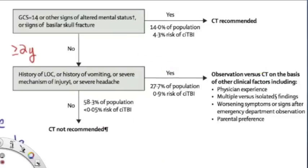Now let's look at the older kids. In the kids who are 2 or older, we're going to follow this rule. Again, if they have a GCS of 14 or other signs of altered mental status or basilar skull fracture, you know what? Go ahead and get the CT because they have a risk of clinically important brain injury of 4.3% or about 1 in 24. And this far exceeds our 1 in 1,000 risk of cancer.